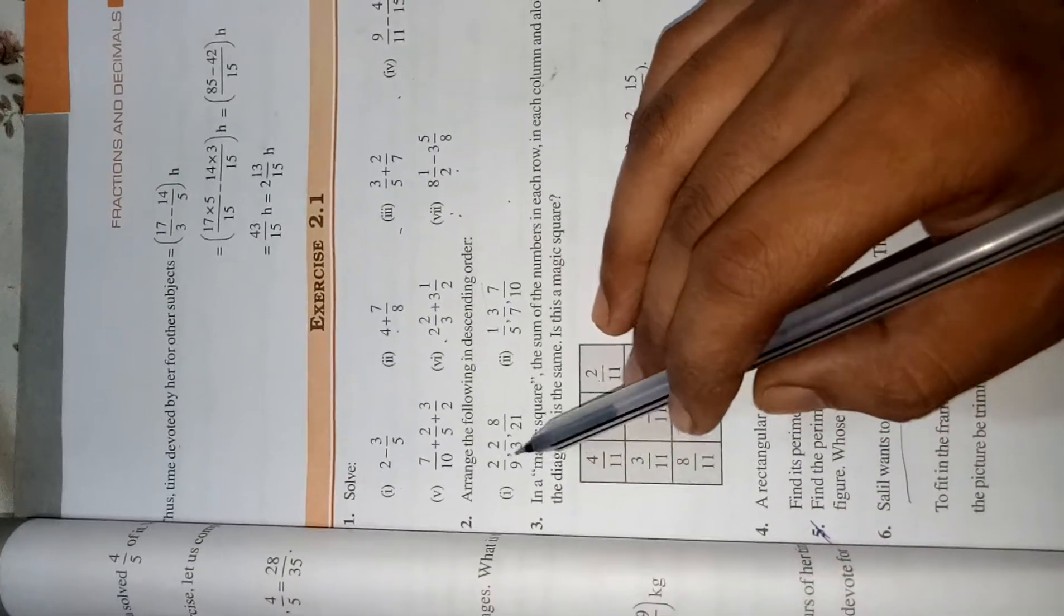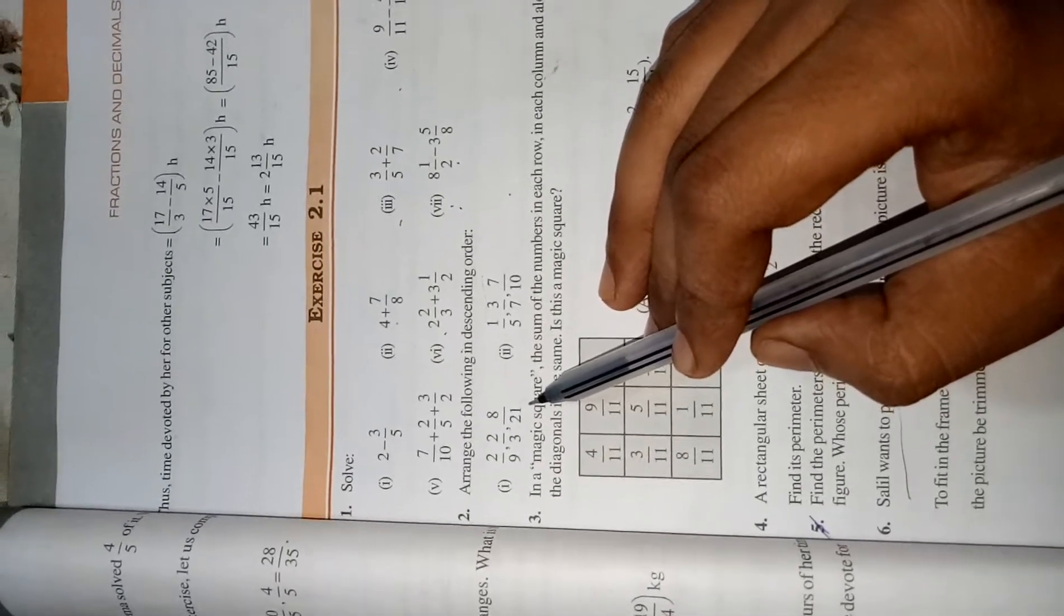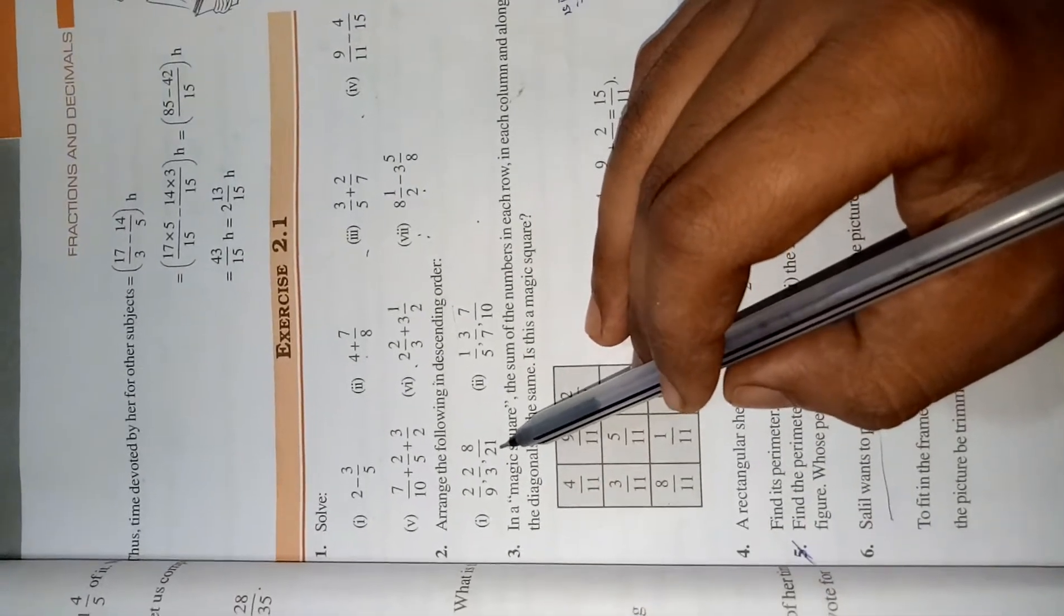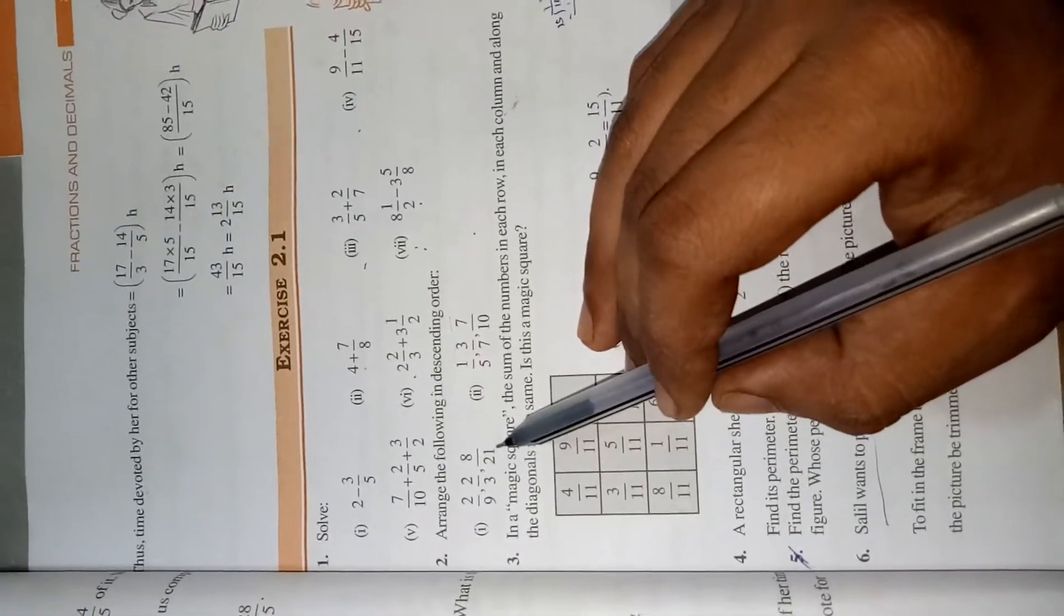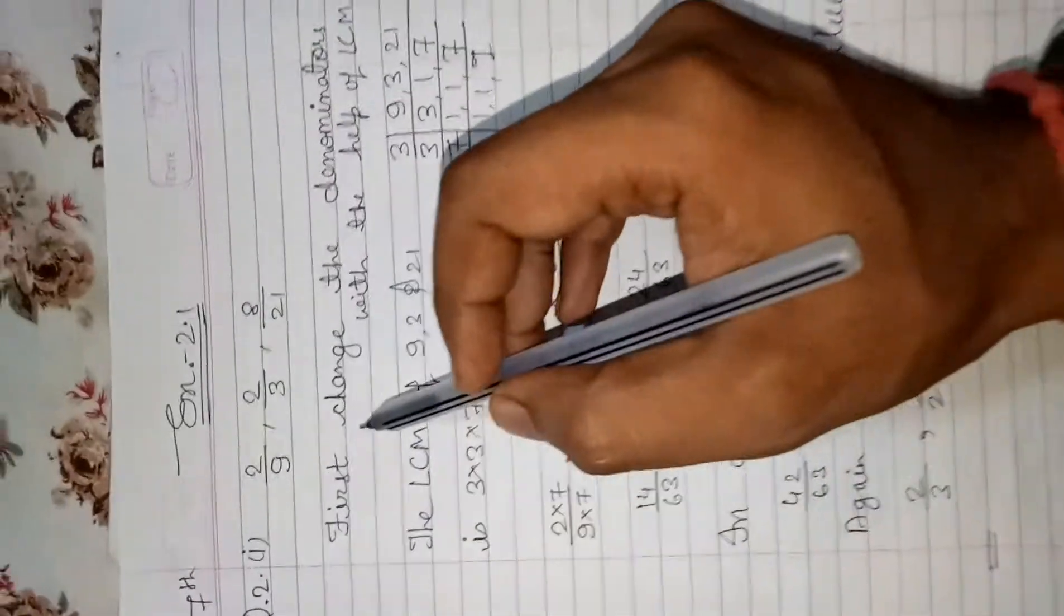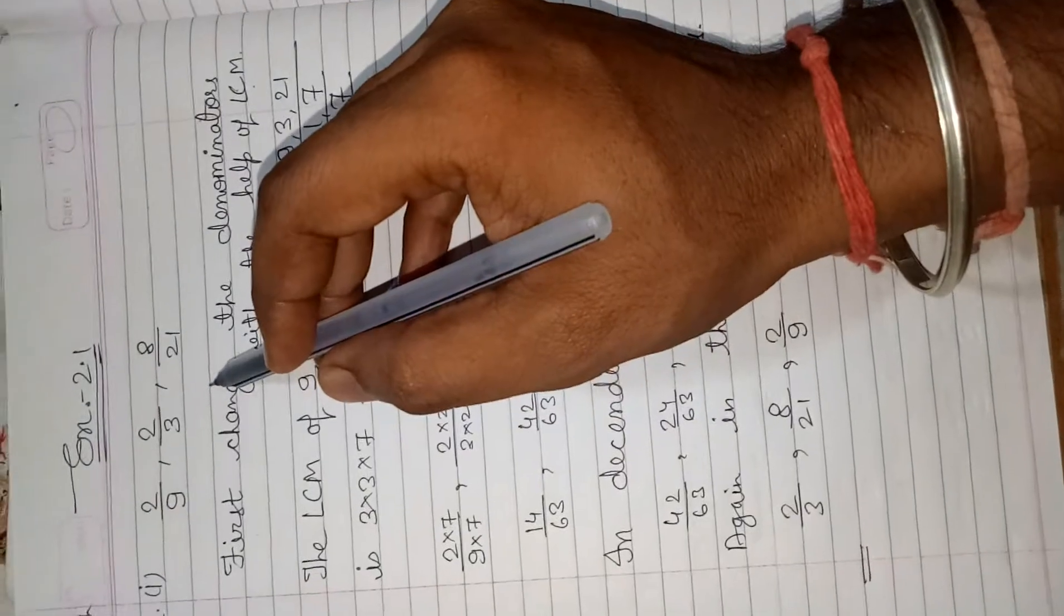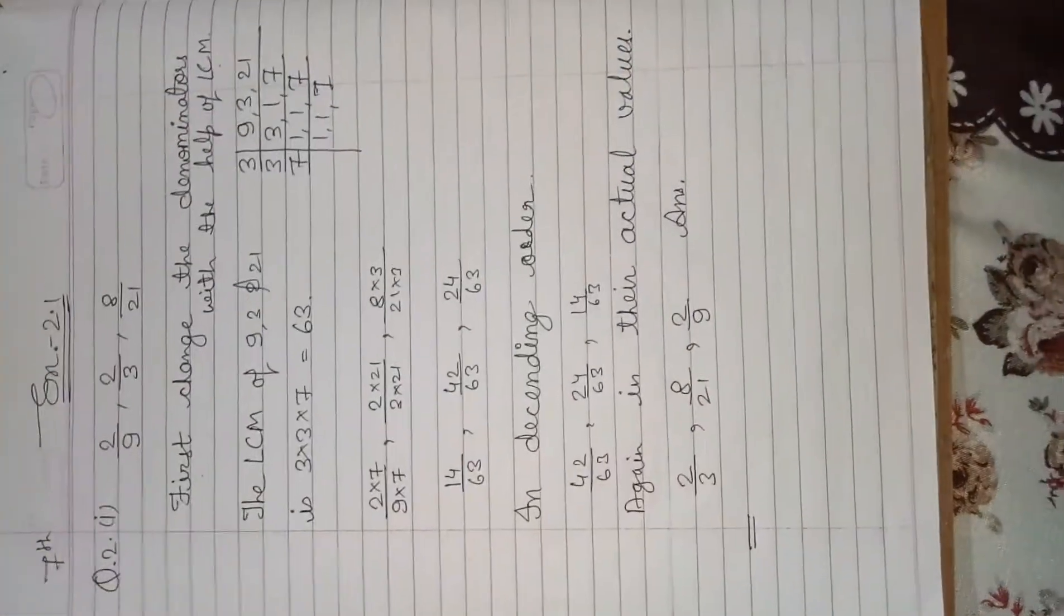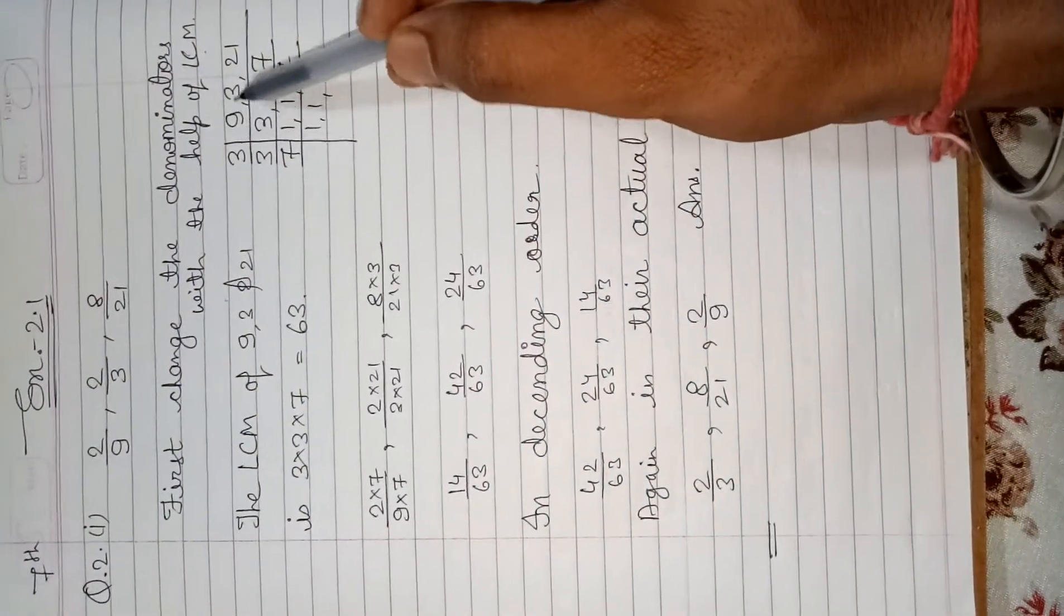First, 2 by 9, 2 by 3, 8 by 21. They are not like fractions because all the three fractions have different denominators. So first, we have to change the denominators with the help of LCM to same. Then we will say who is bigger or who is lesser. First, find the LCM of 9, 3 and 21.